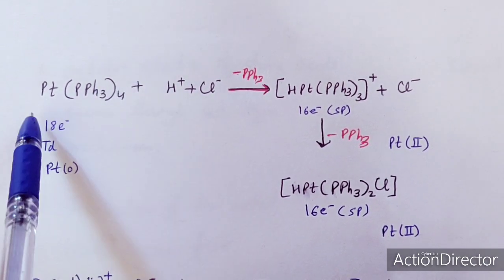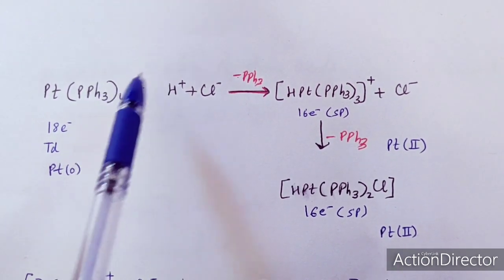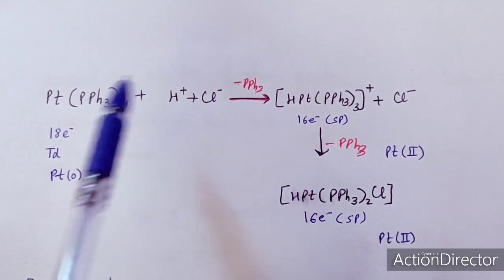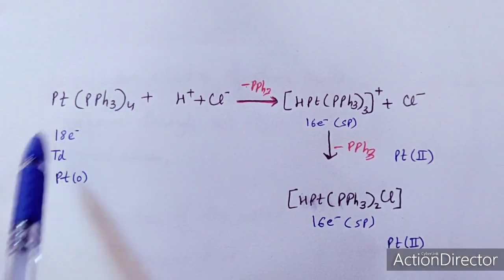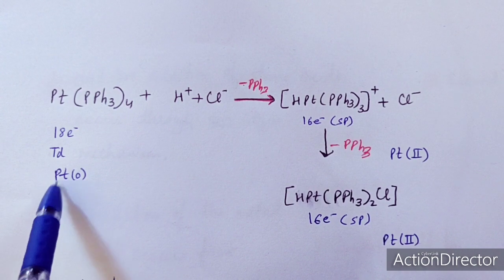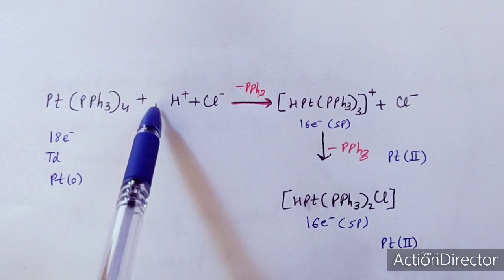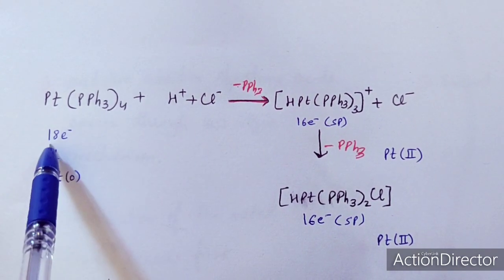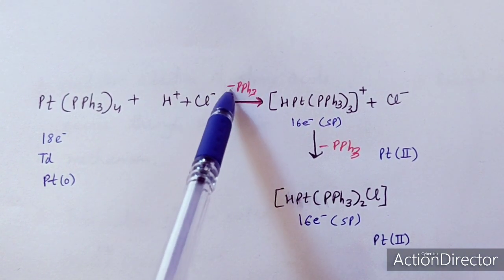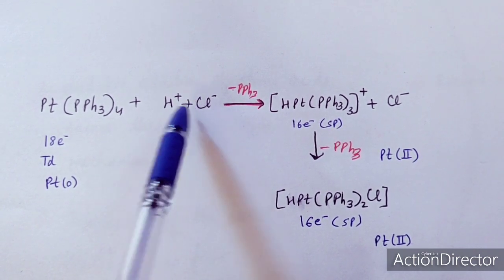When this polar reagent is added to this complex, you can see there are four bulkier groups. First, one bulkier group will be expelled — though in every case this does not occur. In this case, it is an 18-electron species and a tetrahedral species where platinum is in the zero oxidation state. So it is very difficult to oxidatively add this polar reagent to this species; it has to become a 16-electron species first.